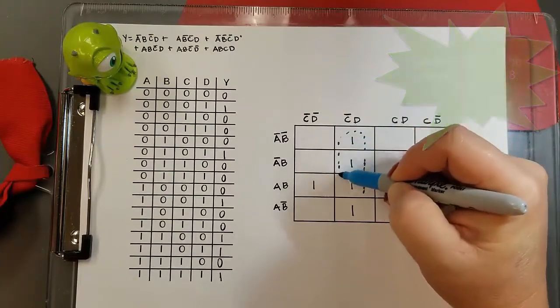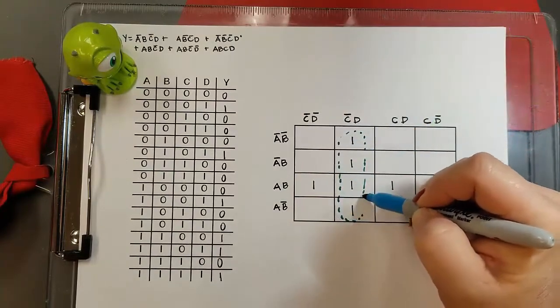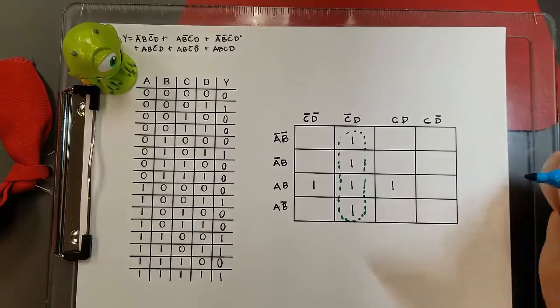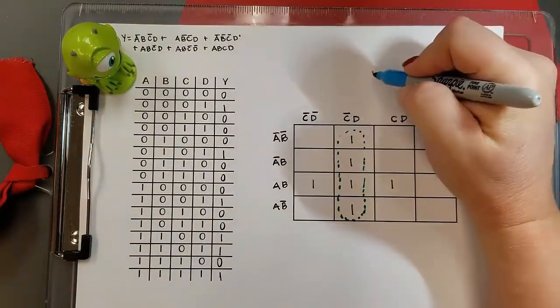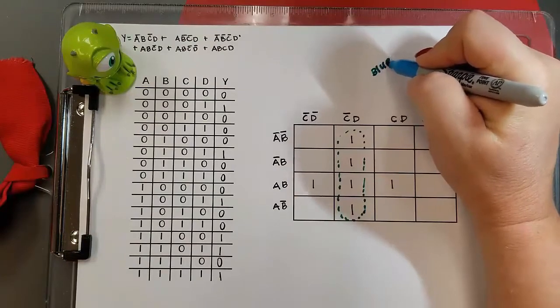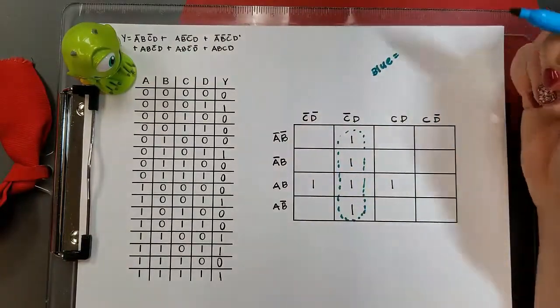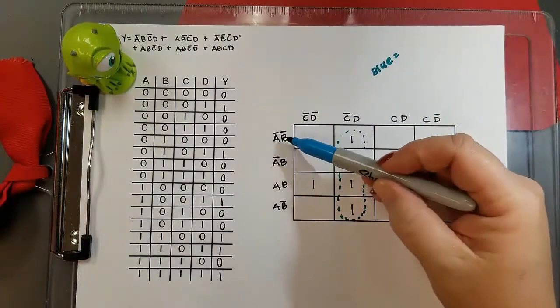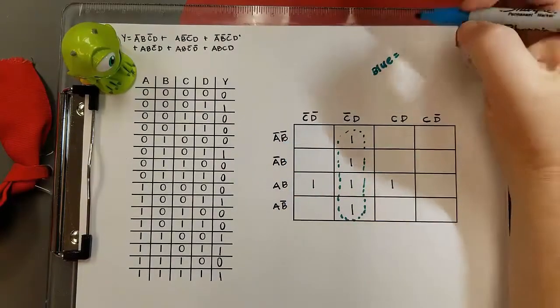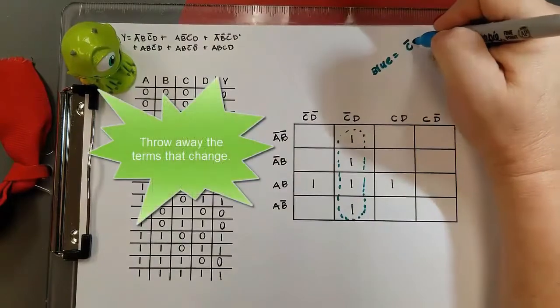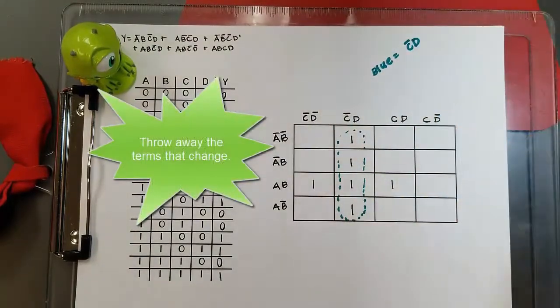With the blue pen, I'm circling the largest group of ones I can find, which is a group of four. Now I want to look at what that term will be. As I moved down, A changed and B changed, so that means those terms aren't important. We're going to get rid of them.